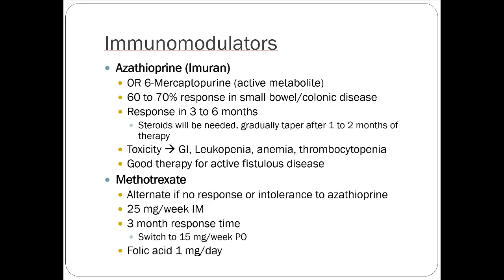Methotrexate is another option for Crohn's, used very similarly to RA. Historically azathioprine was first-line, but methotrexate can be considered first-line therapy at 25 mg/week, usually given IM. Sometimes they do a three-month response assessment; if going well, they switch to a weekly oral regimen, but IM is generally preferred. With Crohn's you can't always rely on the GI tract to absorb medications properly, so IM makes more sense. Folic acid supplementation is needed since methotrexate is an anti-folate metabolite.